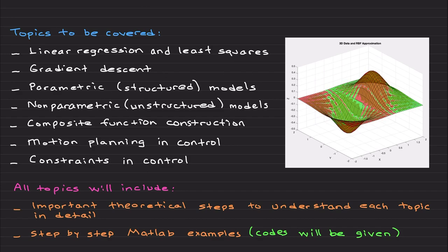And then we're going to look at parametric models or structured, non-parametric models, unstructured. I would like to also cover composite function construction, basically constructing functions for spatial needs that we're going to explore. Motion planning in control and constraints in control. These are the initial topics.